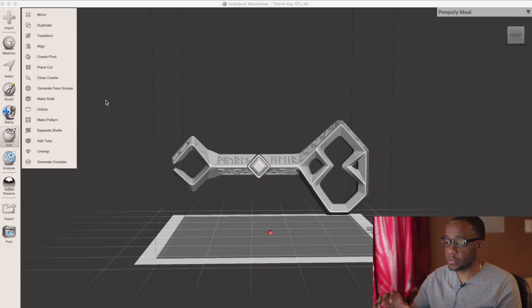The reason we're hollowing this out is because we do not want to waste resin. Resin is pretty expensive, so printing this key solid just wouldn't be cost effective. And it would just be easier to print if we print this hollow.